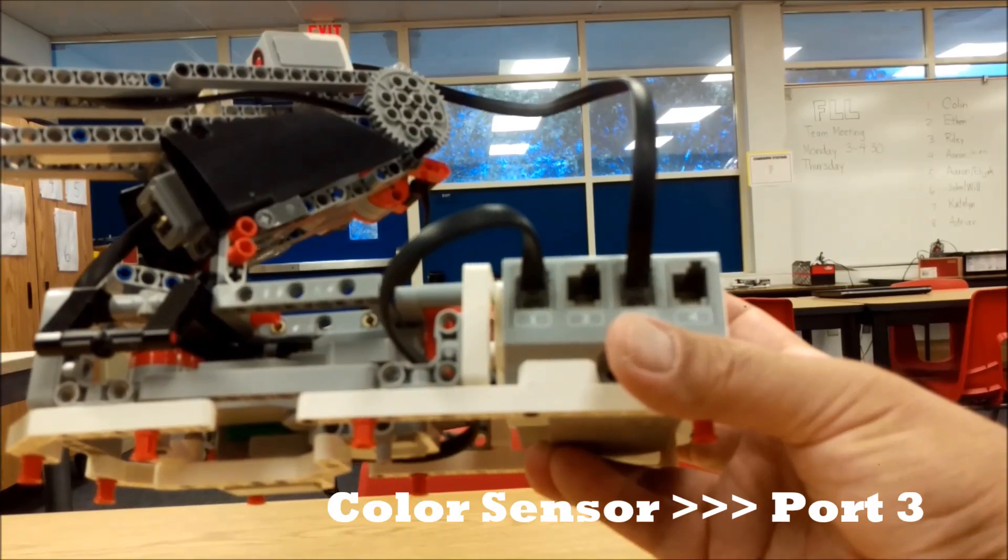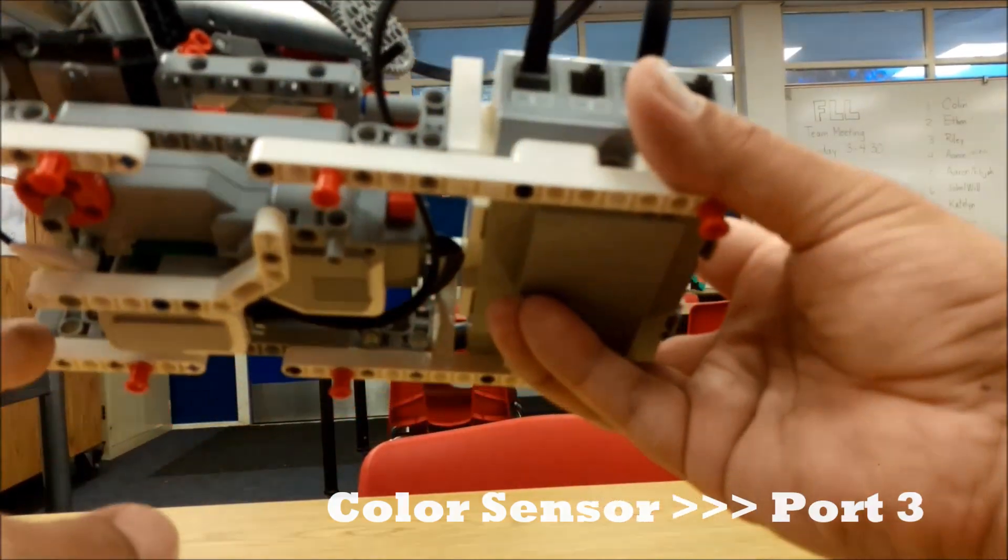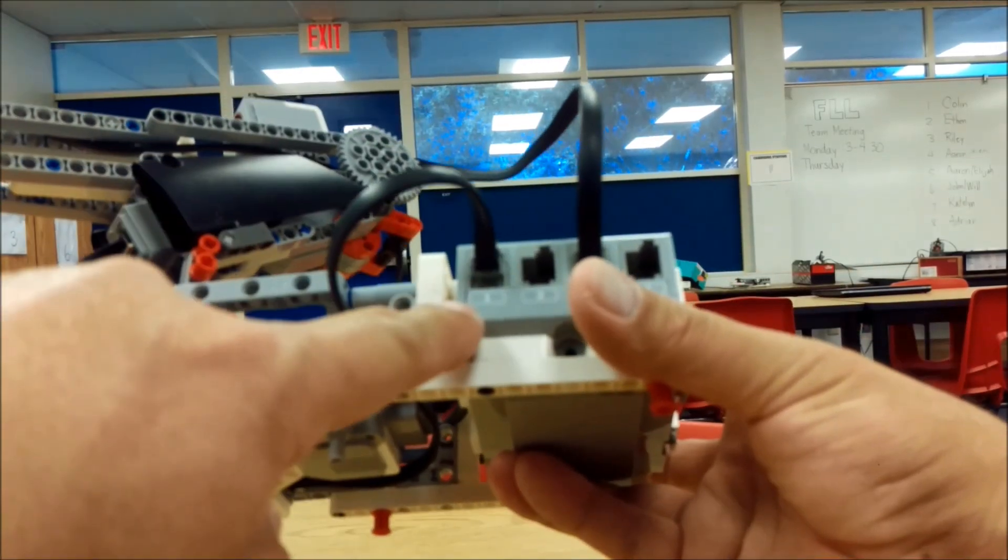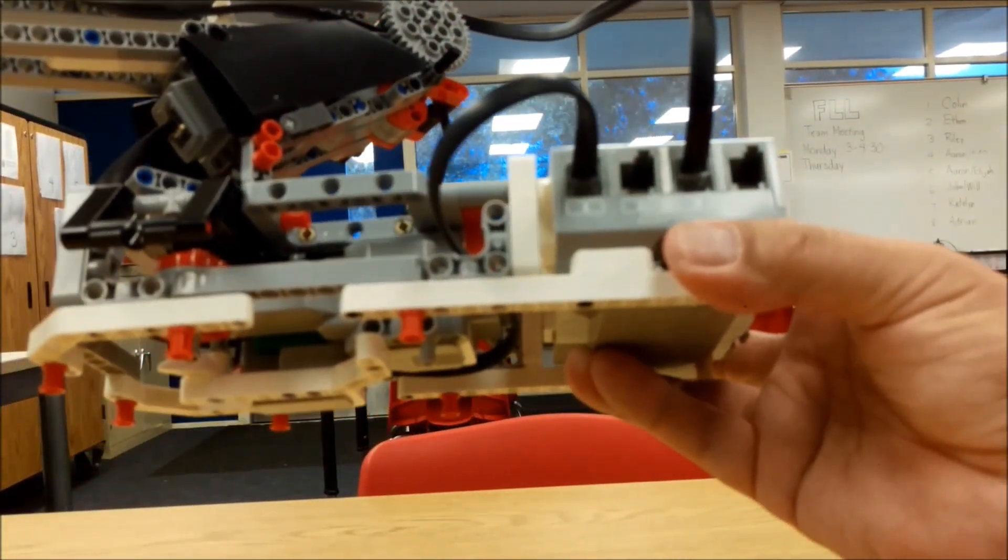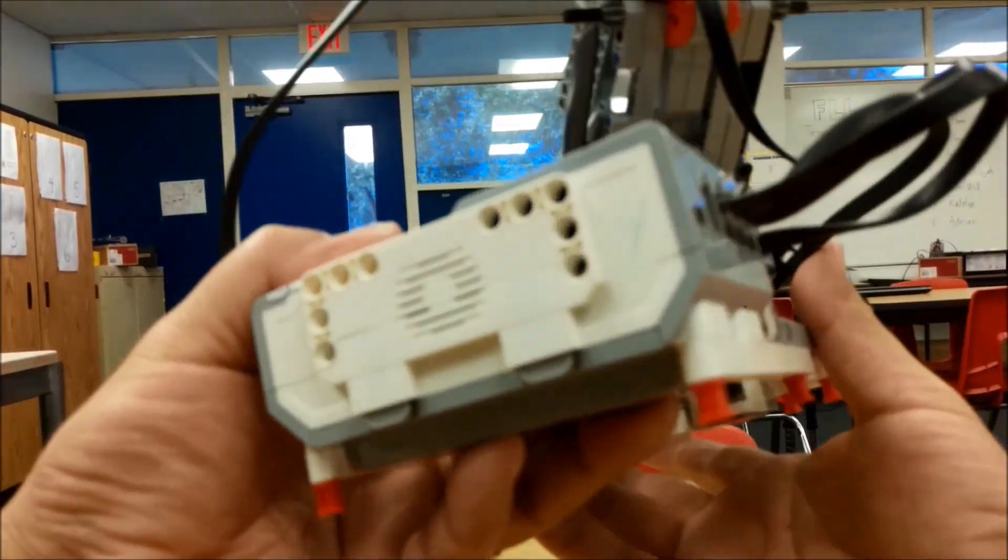So if you're having issues with your program, just double check that again. Touch sensor going into port 1 and your color sensor going into port 3. Alright, now let's turn this around.